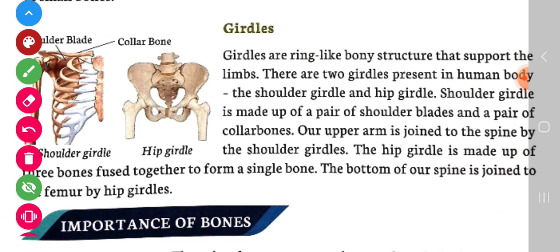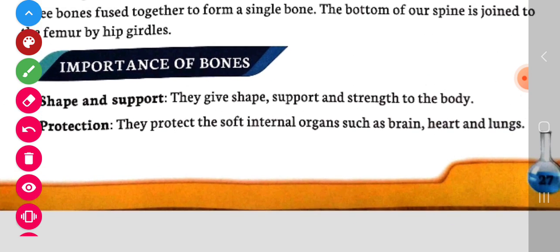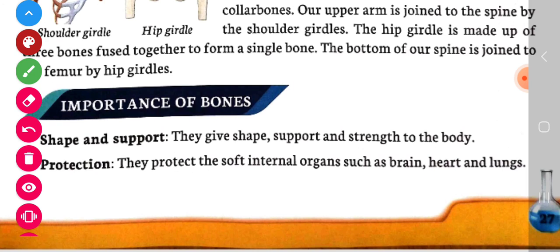Our upper arm is joined to the spine by the shoulder girdles. The hip girdle is made up of three bones fused together to form a single bone. The bottom of our spine is joined to the femur by the hip girdle.